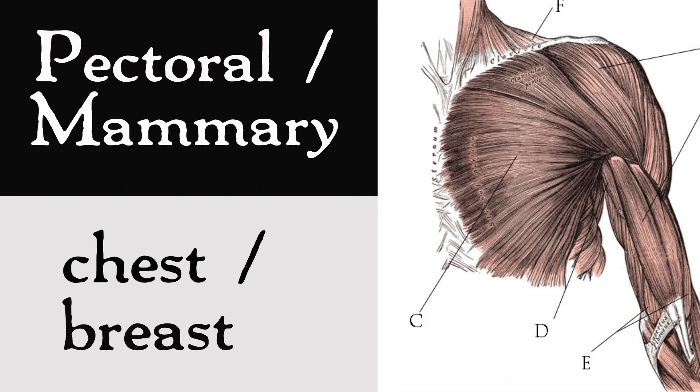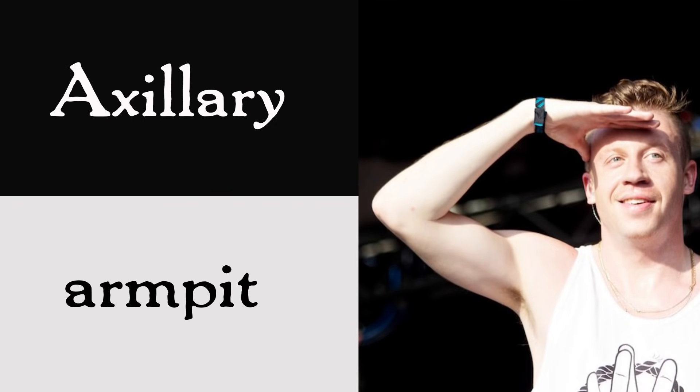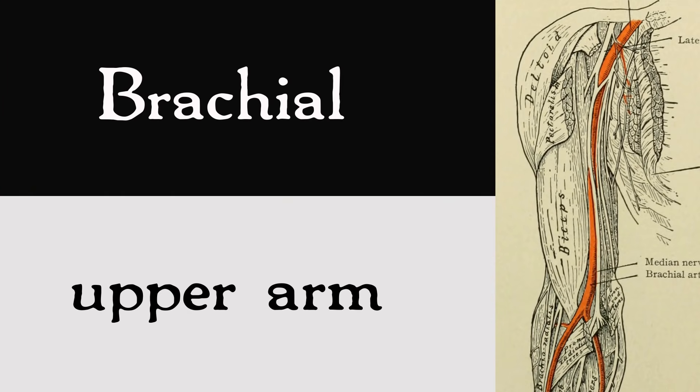Pectoral and mammary both mean breast or chest. Mammary has the word mama in it. Fair warning: biosex women still have pectoralis muscles, and biosex men still have nipples, so just use whatever term your teacher says. The axillary regions are your armpits — axillary and armpit both start with A. The brachial region is your upper arm, and it's those big brachial muscles that help you break things. Can we just rename arm wrestling to brachial battles?